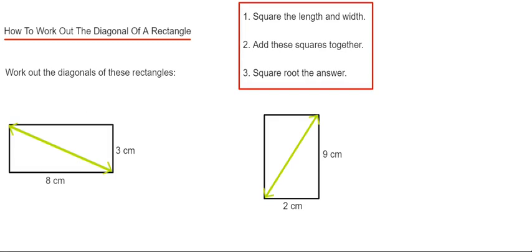Hi guys, welcome back, this is Maths 3000. I'm going to show you how to work out the diagonal length of a rectangle. You can do this in three easy steps. The first step is you square the length and square the width.